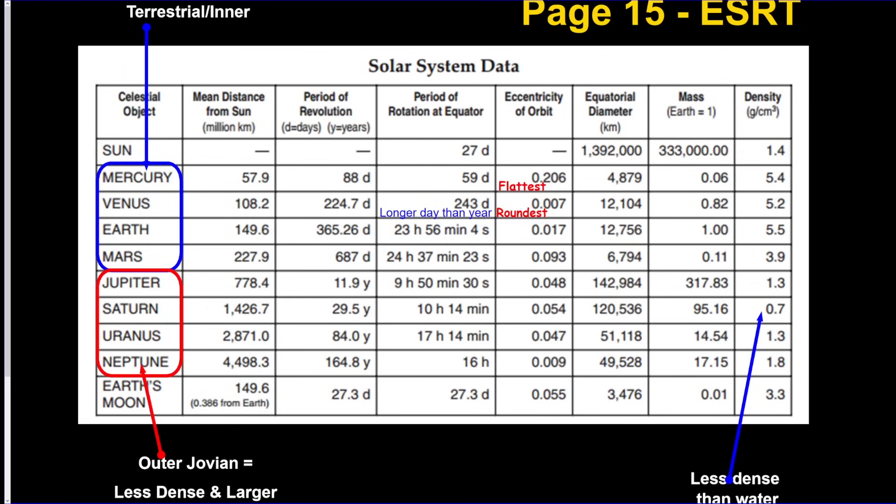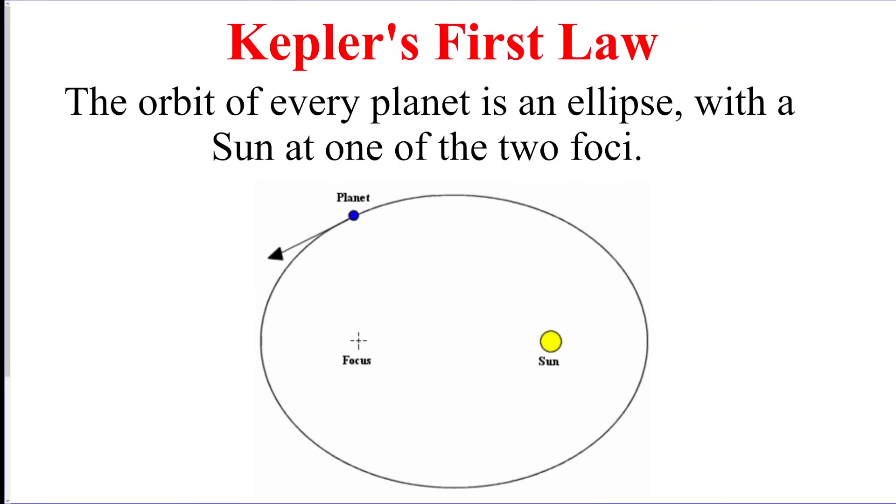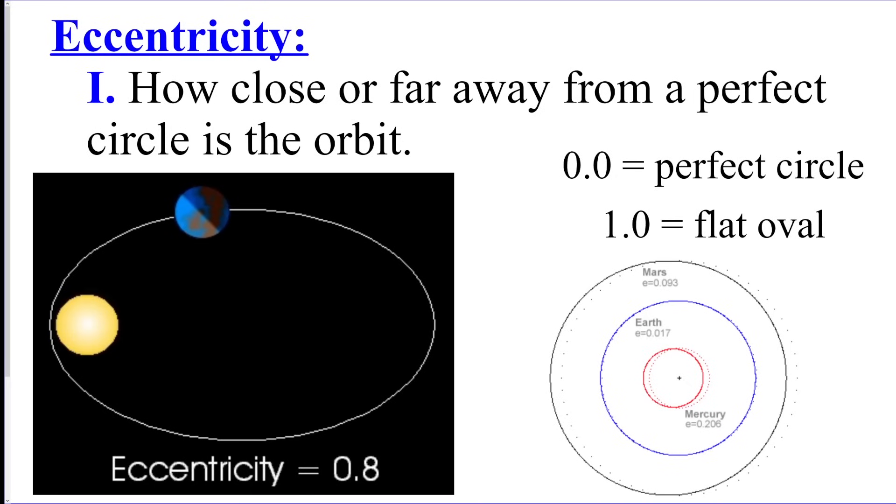All right, we got Kepler. His first law: just that every planet travels in an ellipse around the star with the Sun at one of the two foci. So there's two focus points, and the star that the planet's orbiting is one of them. Eccentricity—it's how close or far away from a perfect circle the orbit is. The closer the number is to zero, the more circular it is. The closer it is to 1.0, the more ovally it is. So the solar system planets are pretty circular, but there's none that are zero. That's the point. That's what Kepler discovered—there's no perfect circular orbits.